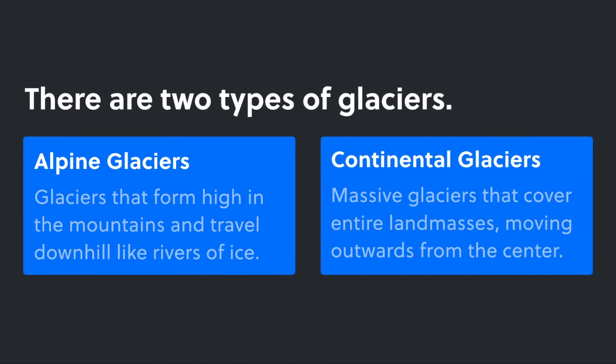Then we have continental glaciers. These are massive glaciers that cover entire land masses, and they tend to move outwards from the center, often towards the coastline.